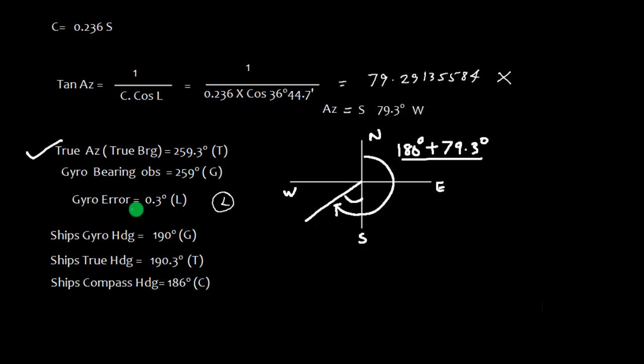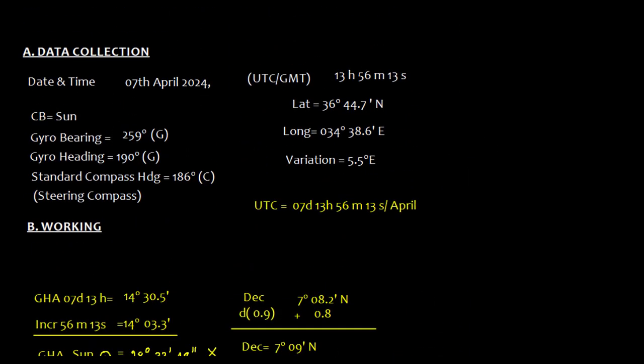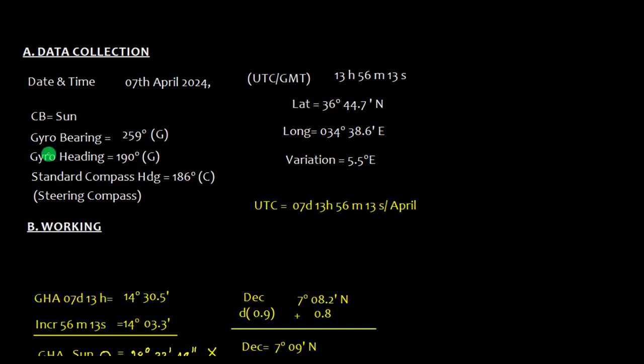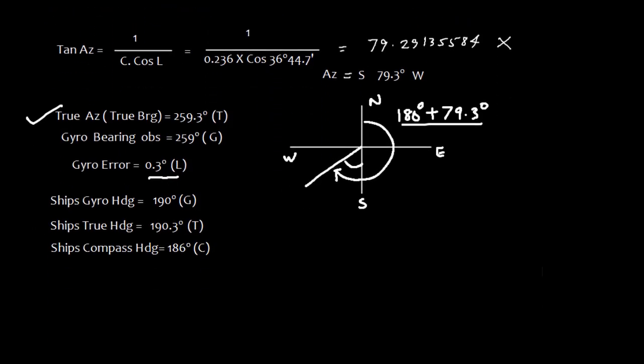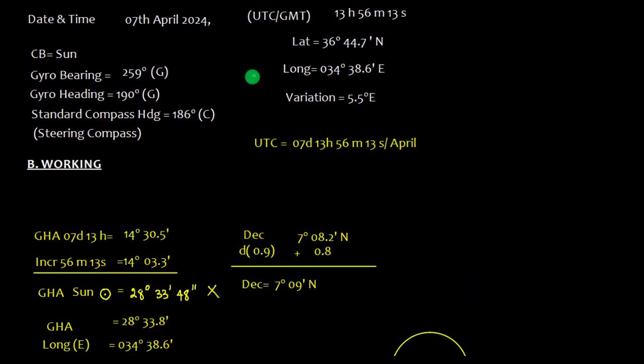Now let's recall ship's heading. The ship's heading was 190 degree gyro. Let me just go up here. The gyro heading was 190 degree gyro. So if the gyro heading is 190 degree, the true heading is going to be 190.3 degree true, because the gyro is low, obviously true is high. And the ship's compass heading which we observed, that is the magnetic heading, 186 degree C. That is how we denote.